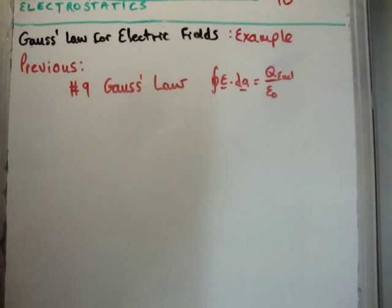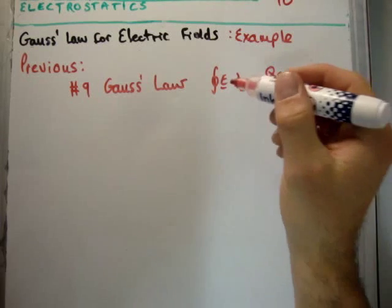So the previous video to this, which is relevant, is number 9, where I discussed Gauss's law. And we saw the flux of electric field through a closed surface was the total charge enclosed, divided by epsilon zero.